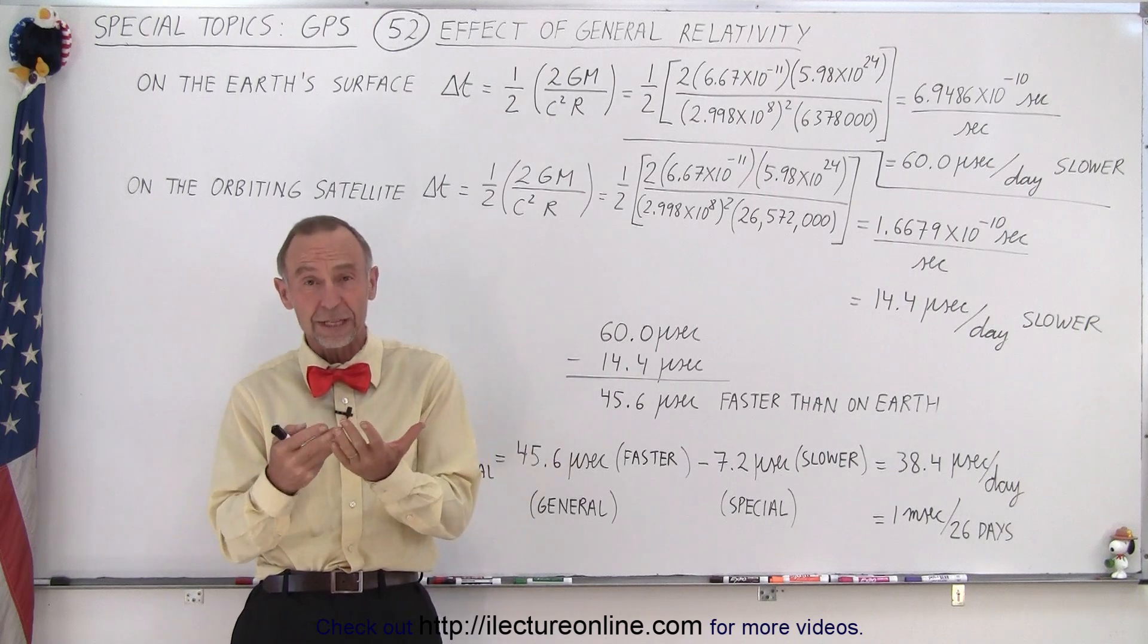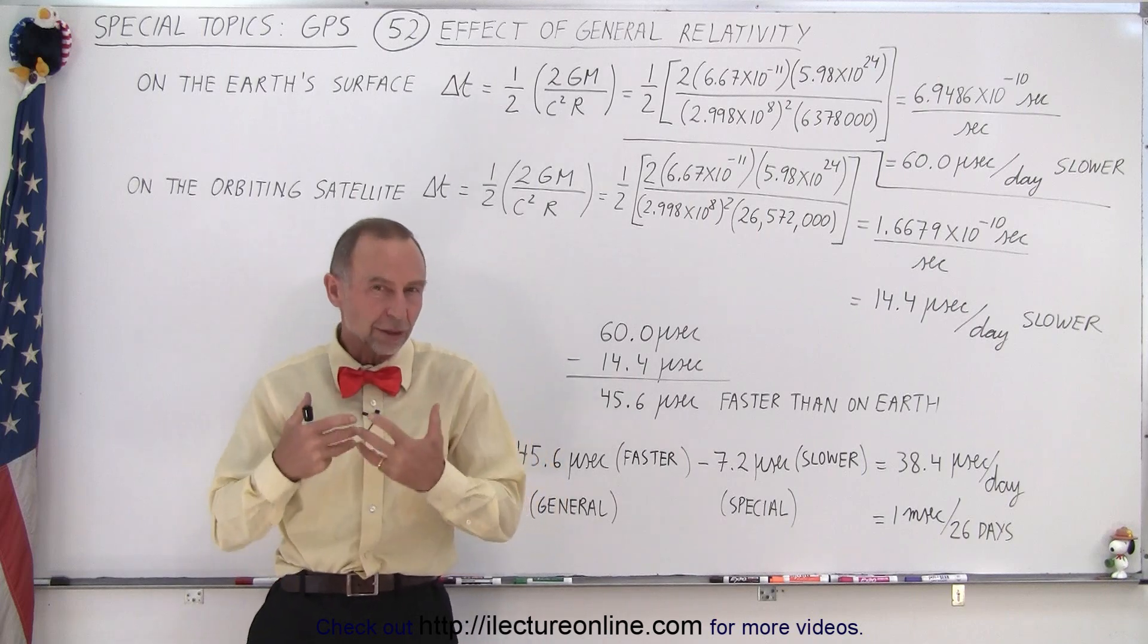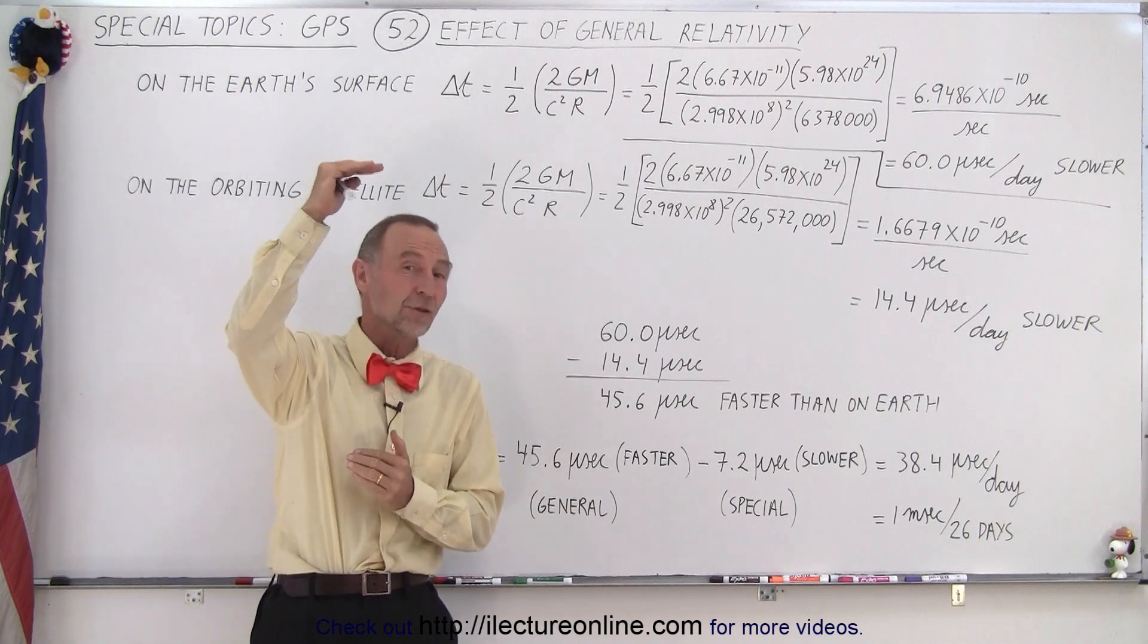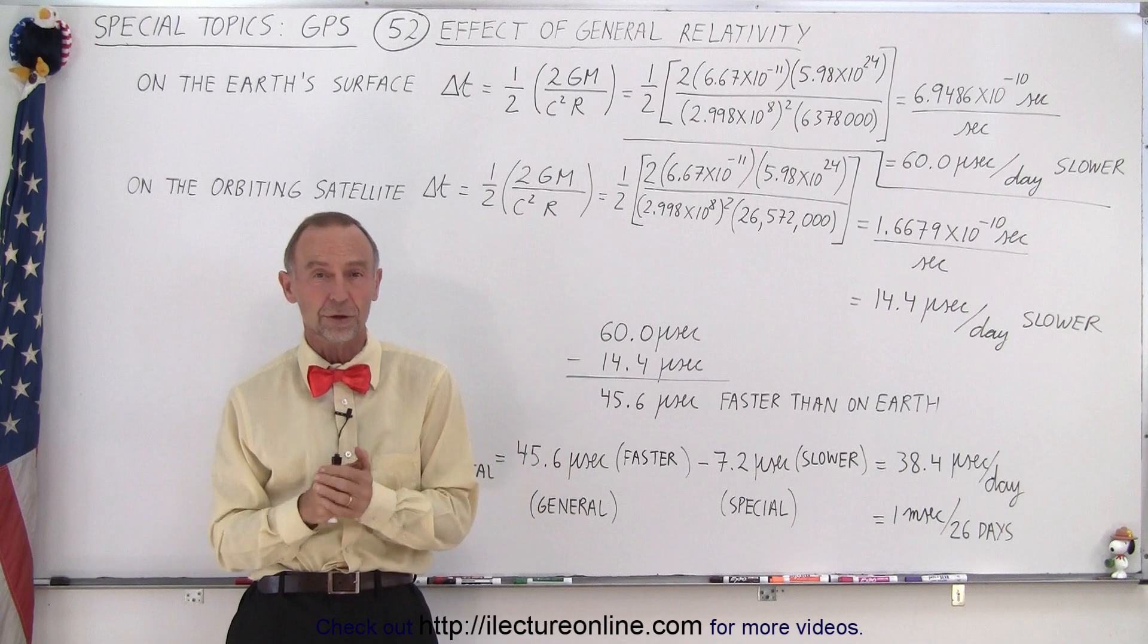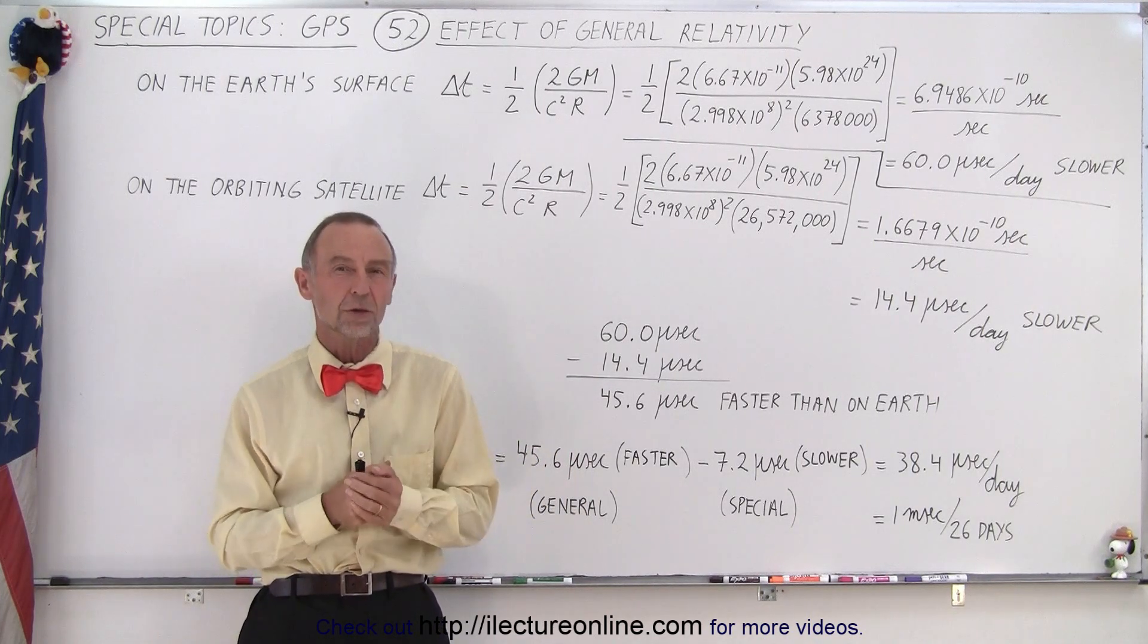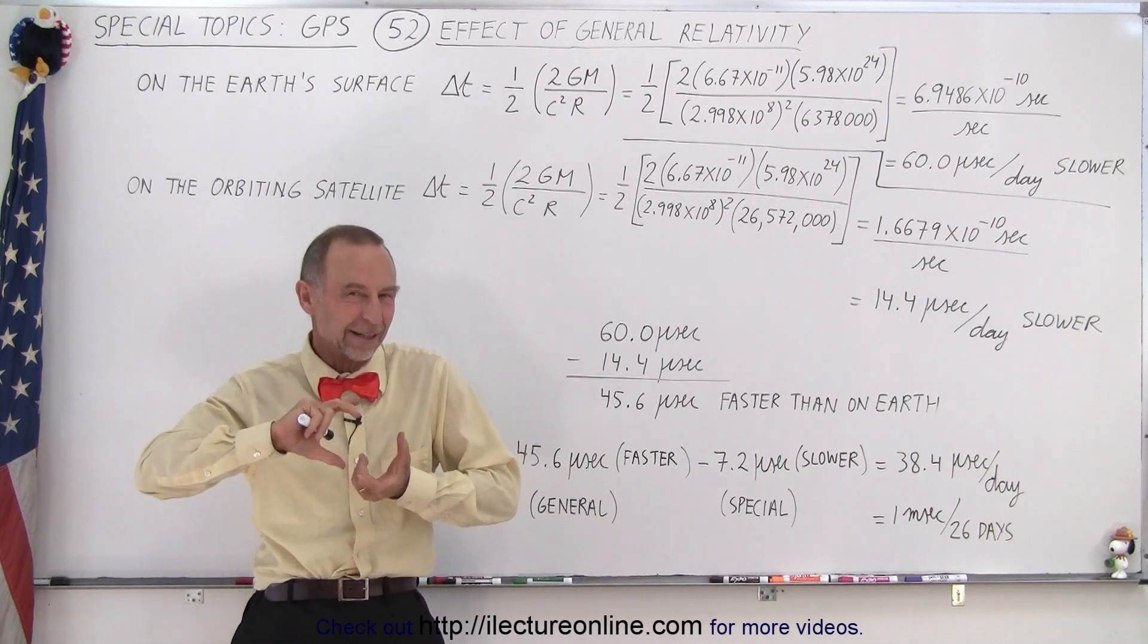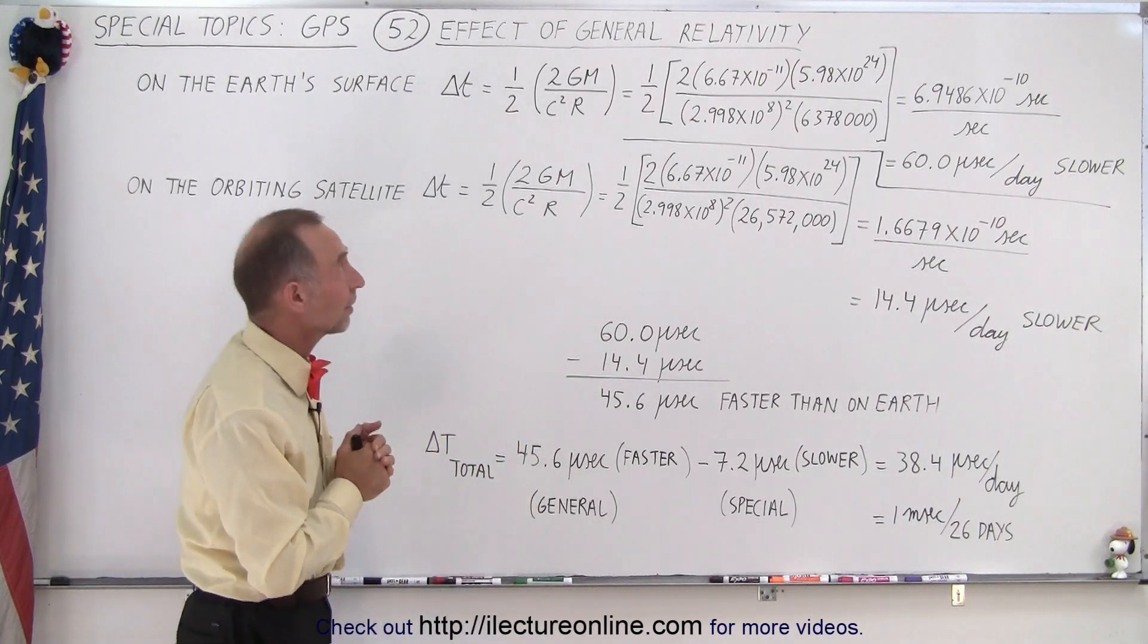Now the special relativity has to do with the fact that the satellites move quite quickly. The general theory of relativity has to do with the fact that the Earth's gravitational force is different at the location where the GPS satellites are as compared to the clocks on the surface of the Earth. The stronger the gravitational field, the slower the clocks run. And so the time on the Earth will run slower than the time in the SVs, kind of the opposite compared to the special relativity theory.